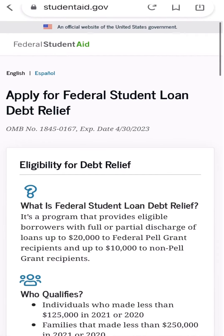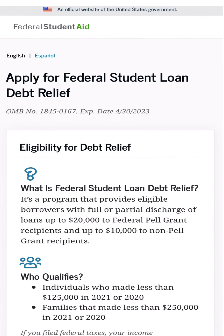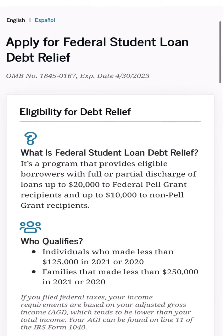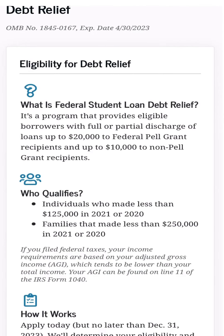After clicking that, it will show you the eligibility requirements. You can be eligible for $20,000 if you received a federal Pell Grant, or $10,000 if you're a non-Pell Grant recipient. You must have filed your taxes as an individual making less than $125,000 in 2021 or 2020, or as a family with combined income less than $250,000 in 2021 or 2020.